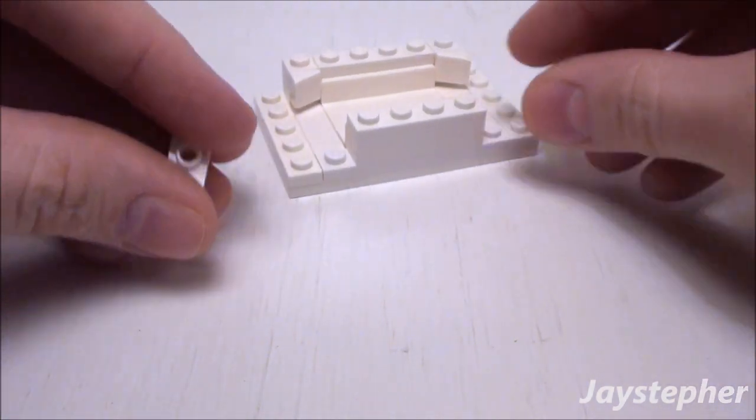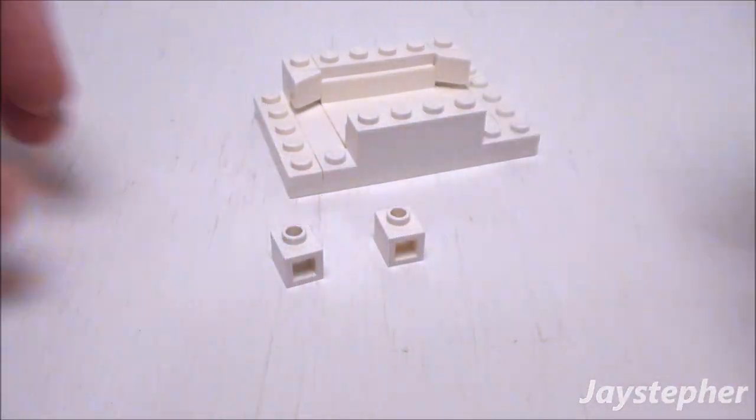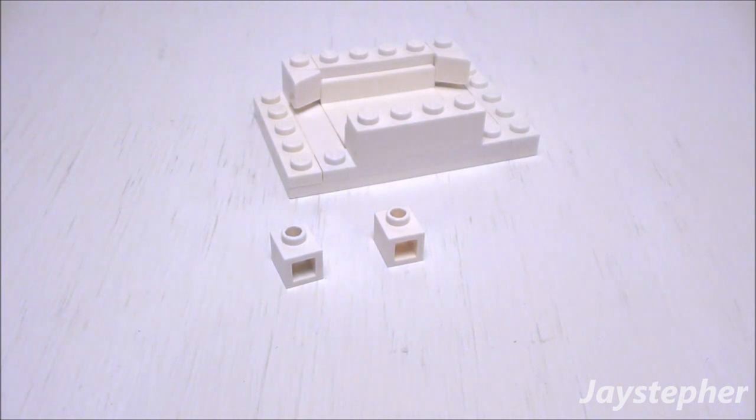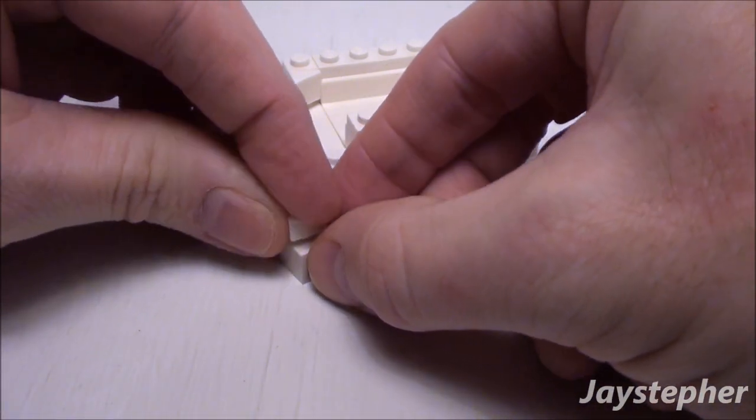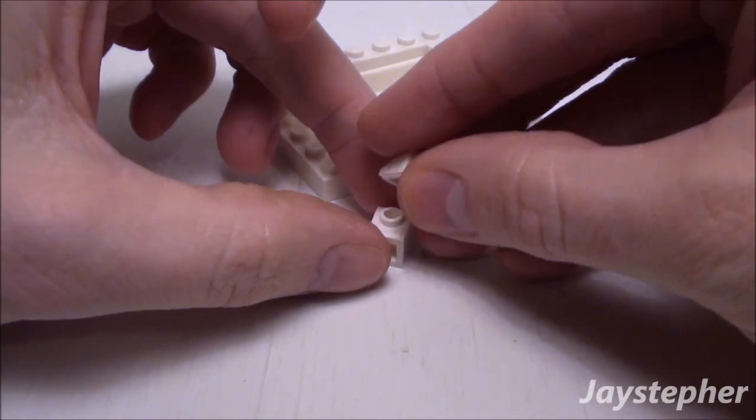So let's take two more 1 by 1 bricks with one knob and two more slopes. Repeat the process.